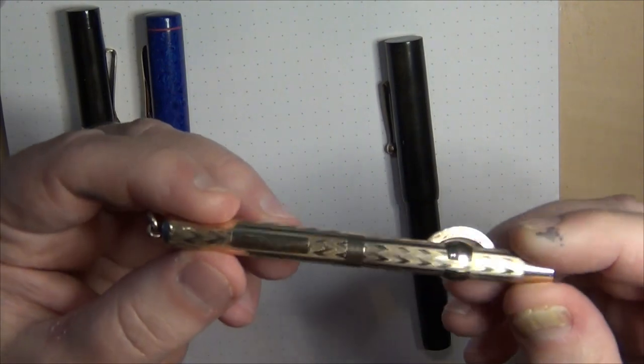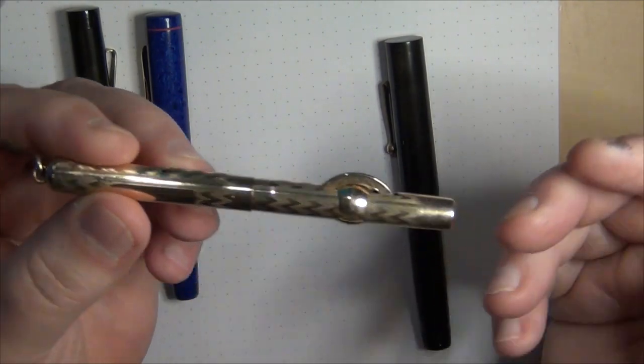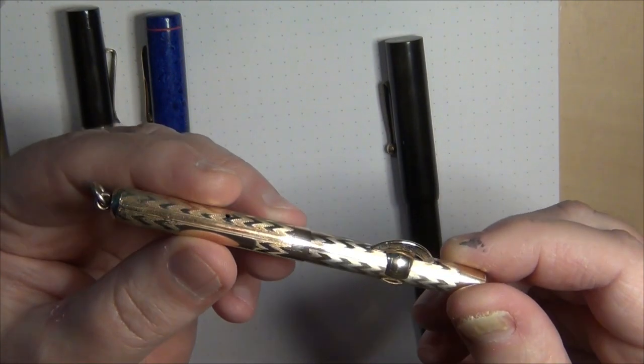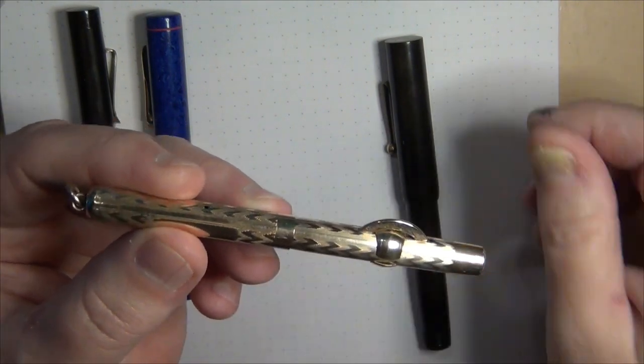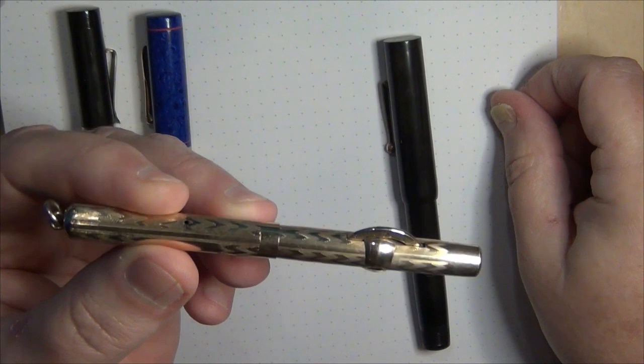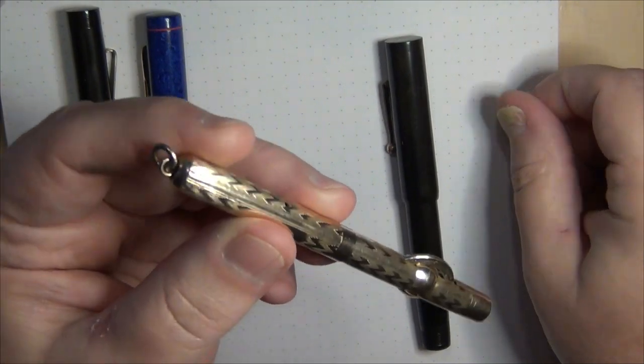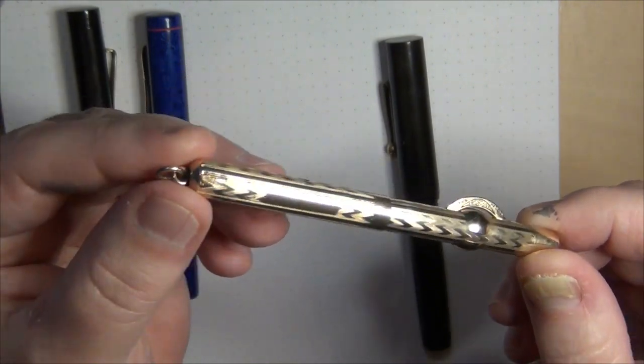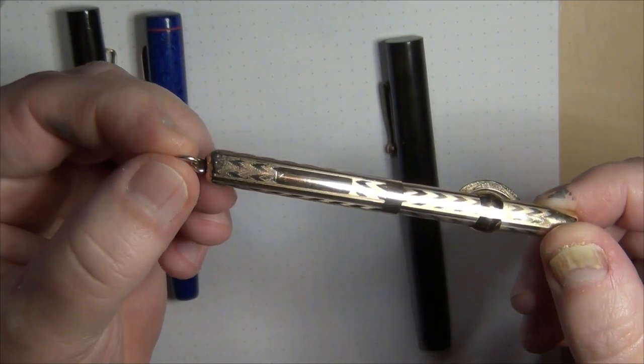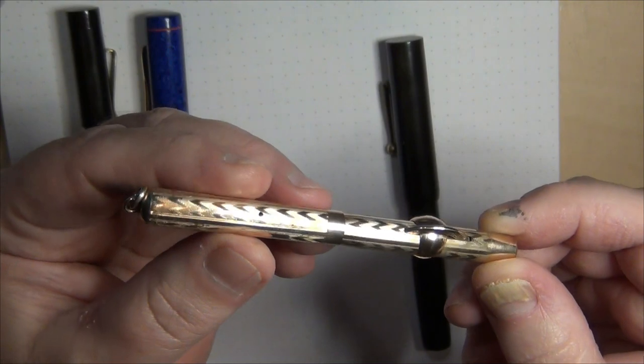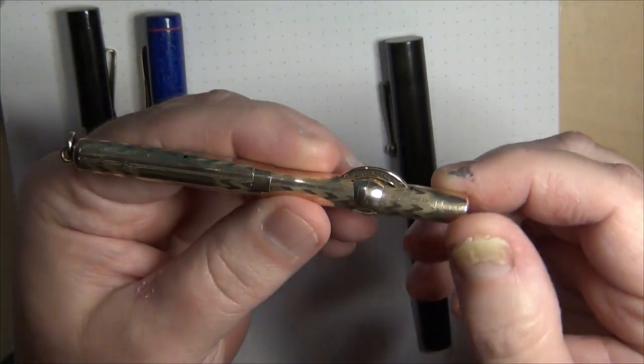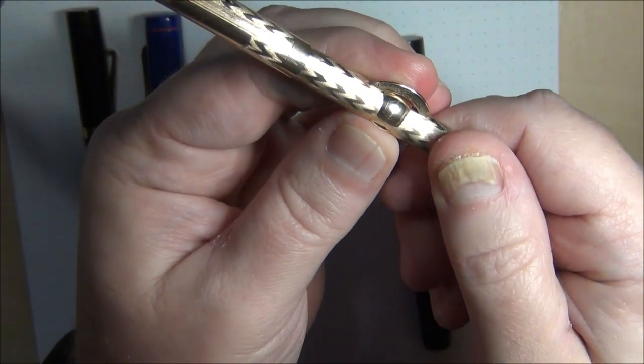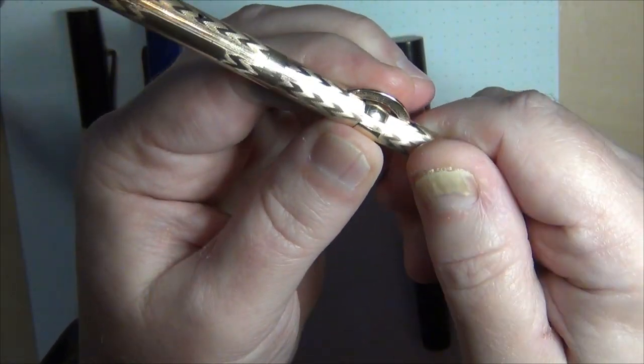Conklin also used to make crescent fillers. Crescent fillers are kind of making a comeback with modern incarnations of the product. But this particular one here, it's an older, probably 1920s. It's got an overlay, it's got a ring top, so it was meant to be possibly carried on a necklace or something like that.